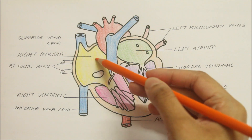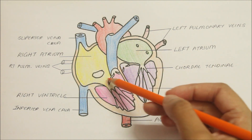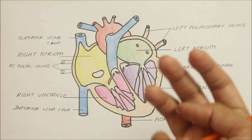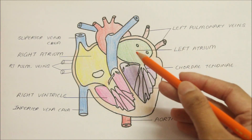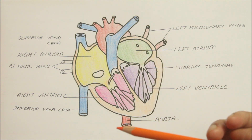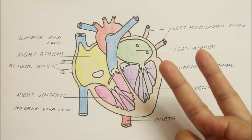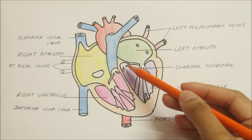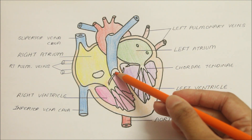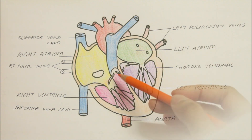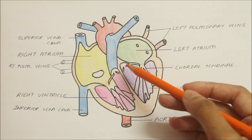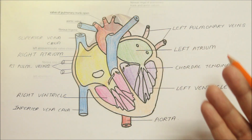The right atrioventricular valve is known as the tricuspid valve, as it has three cusps. The left atrioventricular valve is known as the bicuspid valve, as it has two cusps. The semilunar valves include the aortic and the pulmonary valve, and they have three cusps. The cusps are folds of endocardium strengthened by layers of fibrous tissue.